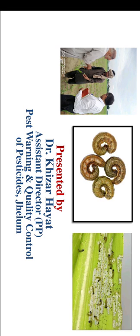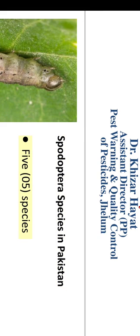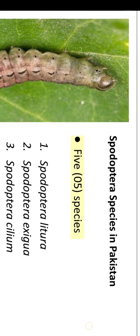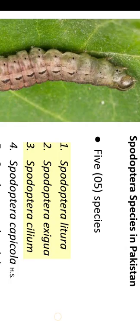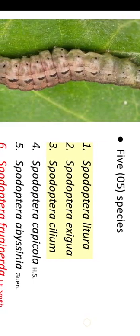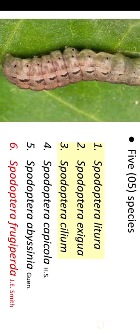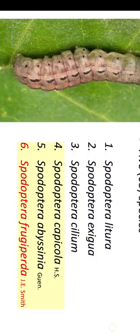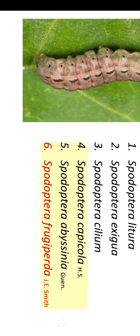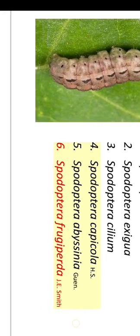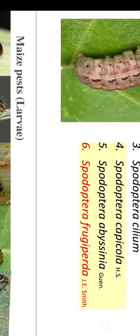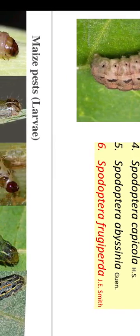Spodoptera species in Pakistan — 6 species: 1. Spodoptera litura, 2. Spodoptera exigua, 3. Spodoptera psyllium, 4. Spodoptera capicola, 5. Spodoptera abyssinia, 6. Spodoptera frugiperda J.E. Smith.